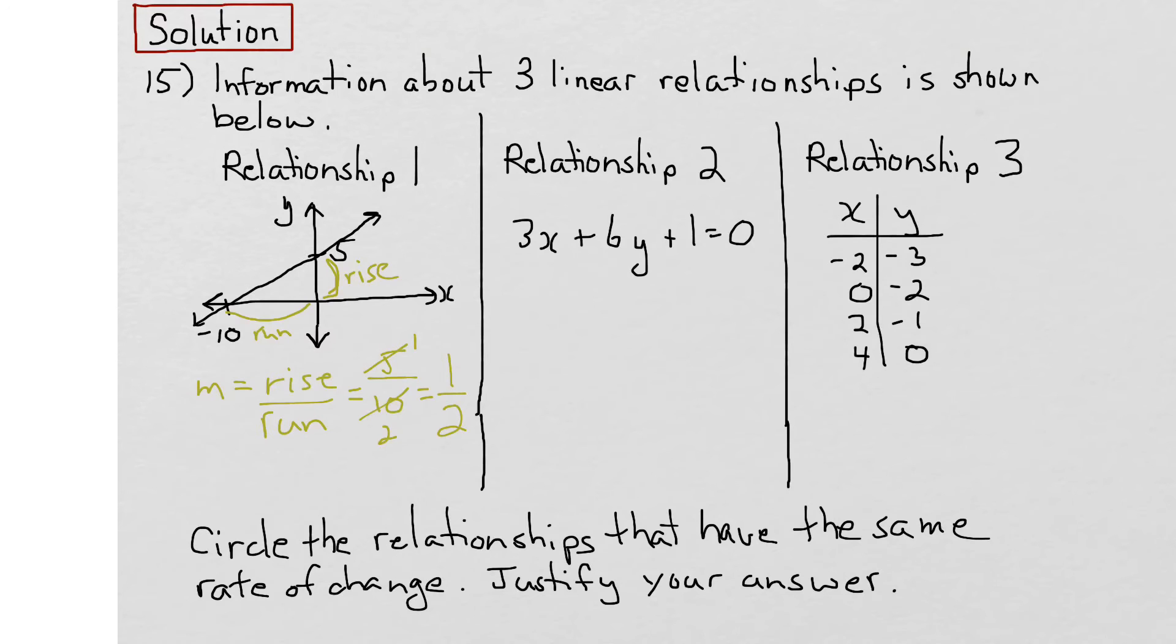We should end up with a positive because we can see that the line goes up to the right. Anything that goes up to the right is positively sloped.